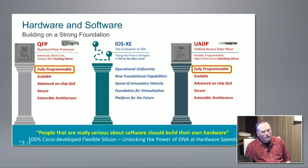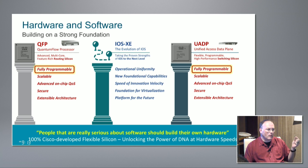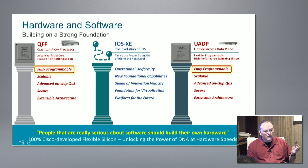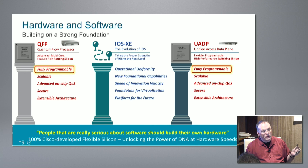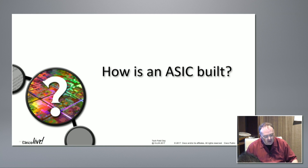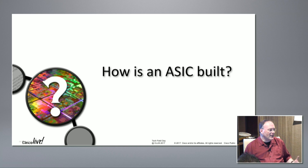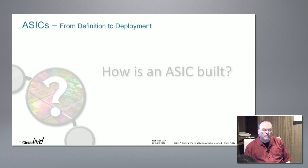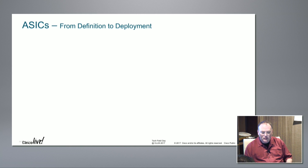UADP is so fully programmable that it has no built-in knowledge of what an IPv4, IPv6, MPLS, CAPWAP, GRE, or VXLAN packet looks like — no built-in knowledge of any packet format. It knows those things because we program it to know through microcode. And that's really significant. In order to talk about ASICs, we need a common language around chips and delve deep into how we build ASICs.